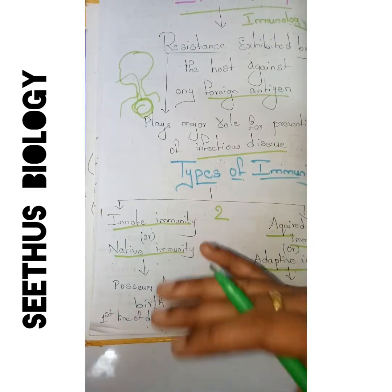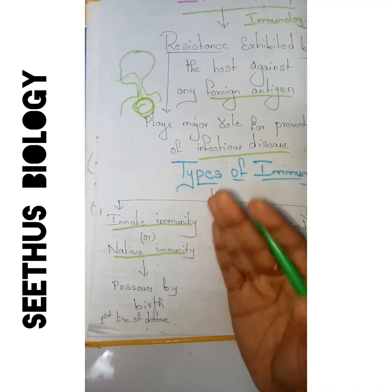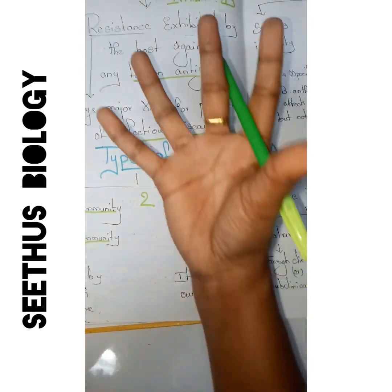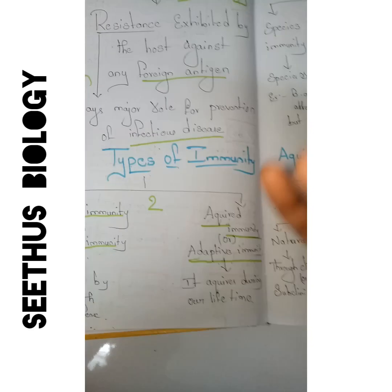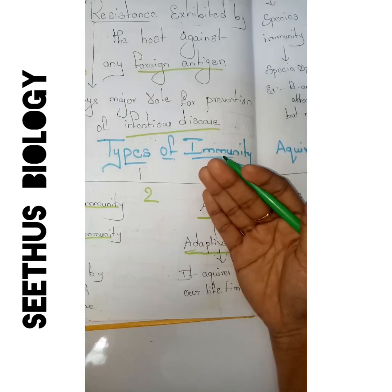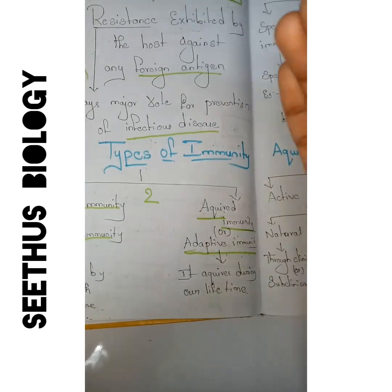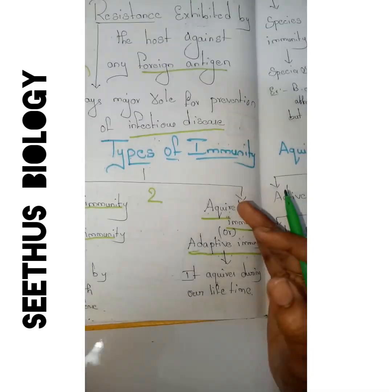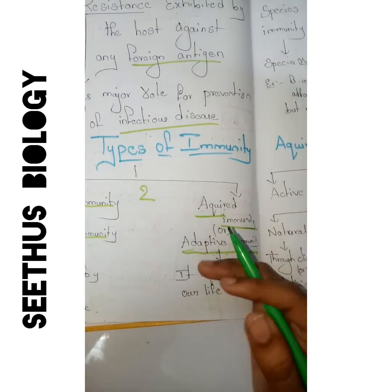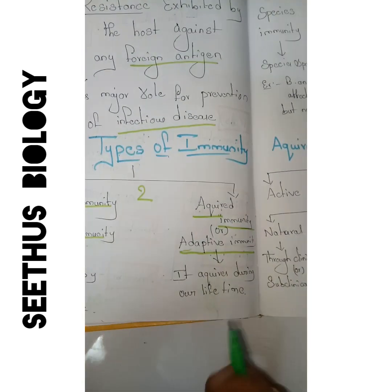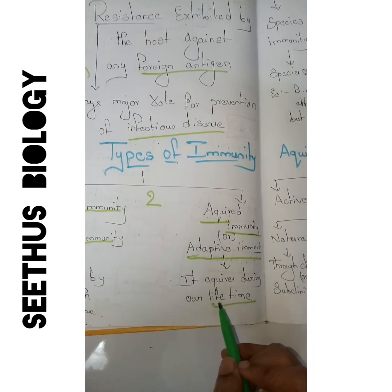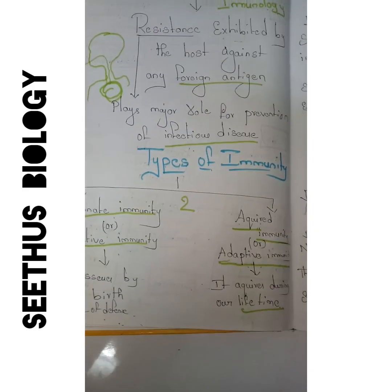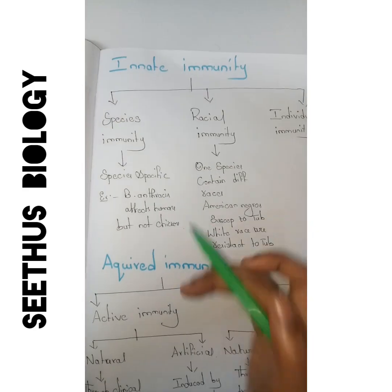Innate immunity acts as the first line of defense against any infectious disease. Acquired immunity — 'acquired' means taking — is the immunity developed during our lifetime based on what food we eat, our lifestyle, environmental conditions, and living conditions. This acquired immunity is built up during our lifetime and acts as the second line of defense against infectious disease.